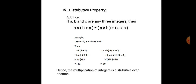Whereas, a into b plus a into c is equal to 5 into minus 6 plus 5 into 4. 5 into minus 6 is minus 30. 5 into 4 is 20. So, minus 30 plus 20 is minus 10. Both left hand side and right hand side are equal. Hence, multiplication of integers is distributive over addition.